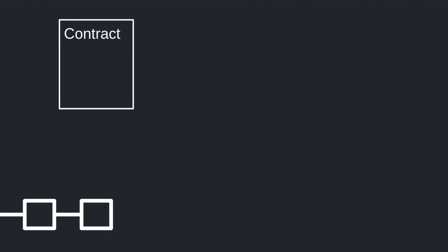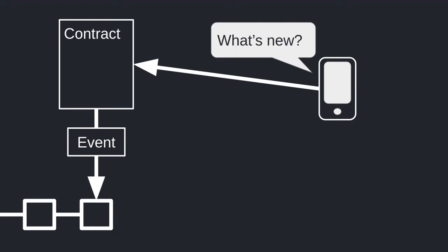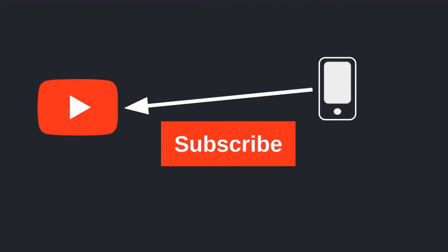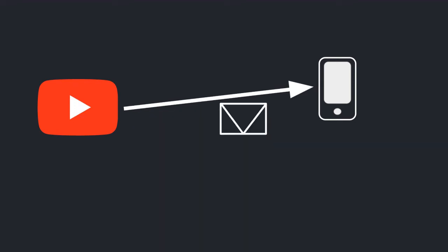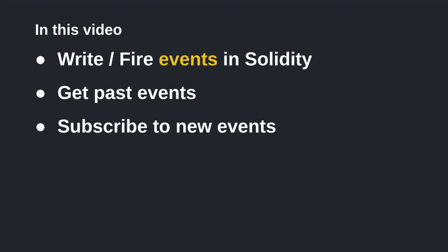Smart contracts can log that something has happened on the blockchain by firing events. Applications can be notified when an event is emitted, instead of constantly monitoring a contract on a blockchain for state changes to occur. This is like YouTube — if you subscribe to a channel, you don't have to repeatedly visit the channel to check if a new video was uploaded. You get notified when a new video is released. In this video, we're going to go over how to write and fire events using Solidity, and how to get past events and subscribe to new events using a library called Web3.js.